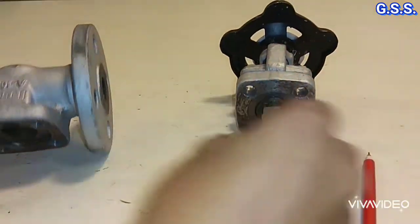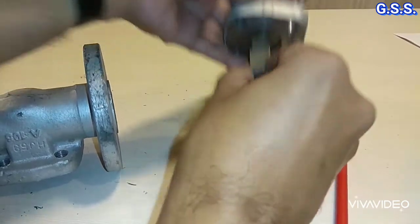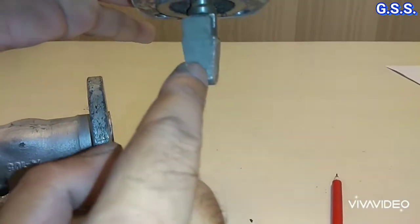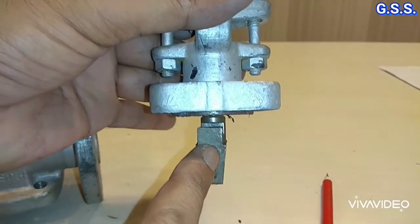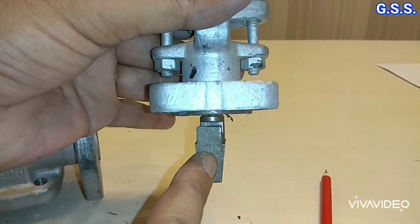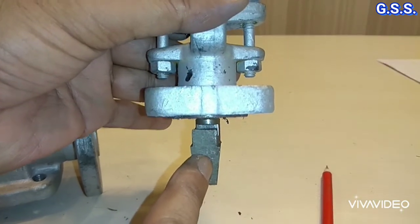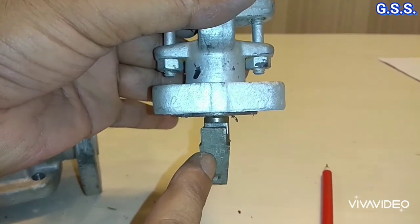So this tapered wedge sits in between two tapered body seats, and when we close the valve, we get leak tightness.